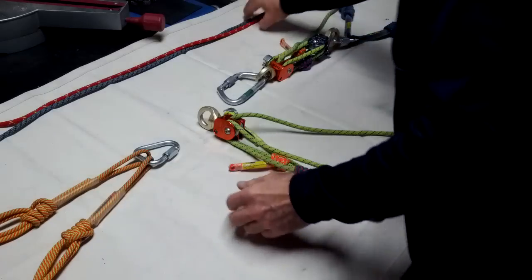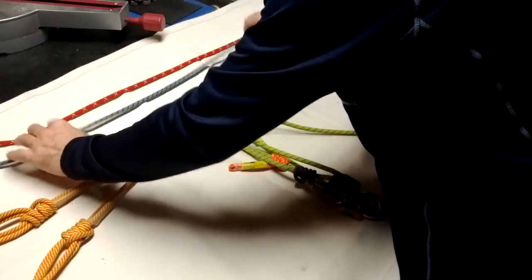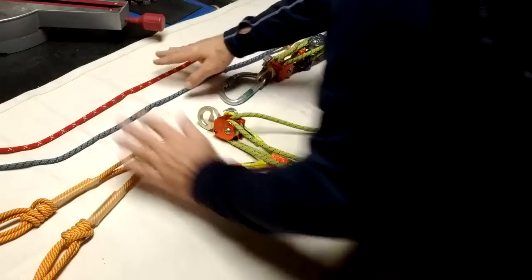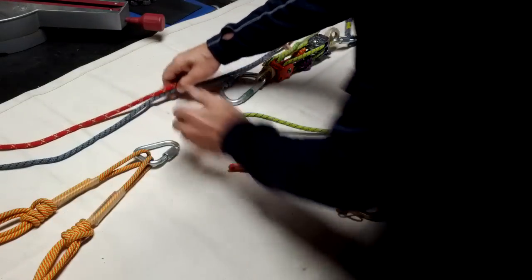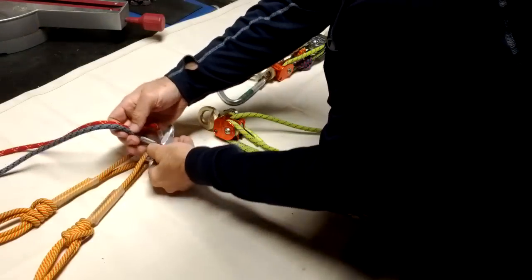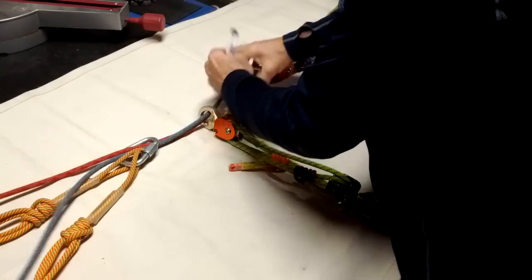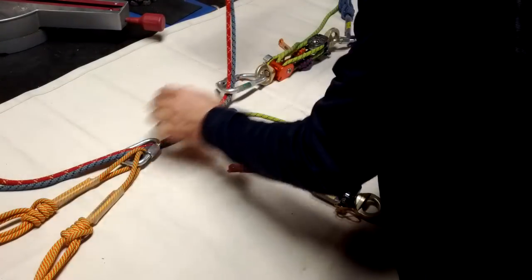Now we have a belay line and a main line. These normally would be 7/16ths or half-inch line. Thread it through the head connection, your personal Aztec, and the foot end of the stretcher.